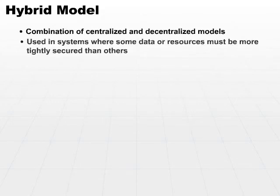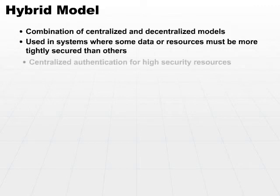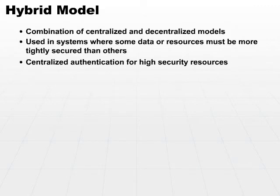Whenever you have some data or some resources that need to be more tightly secured than others, a hybrid model may work well. Take all of your objects that you need to secure, put them under the constraint of your centralized authentication mechanism, and use centralized authentication for these resources.